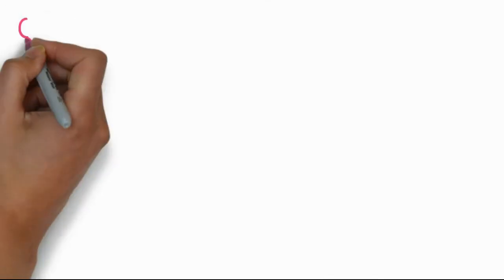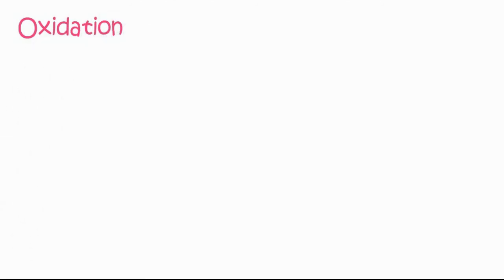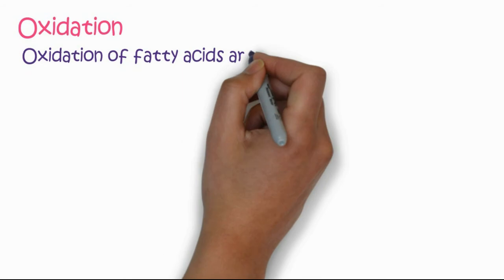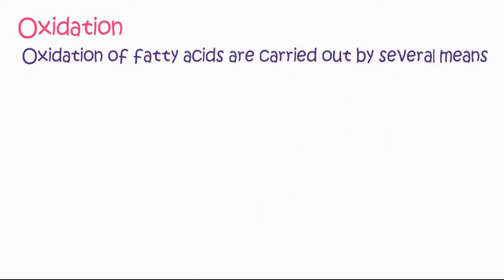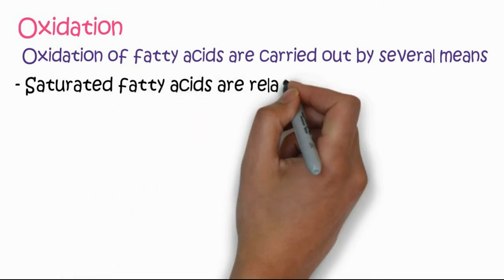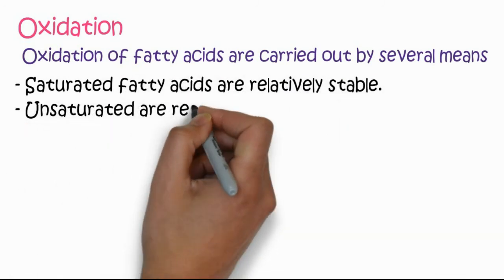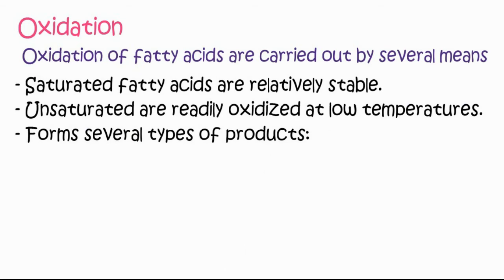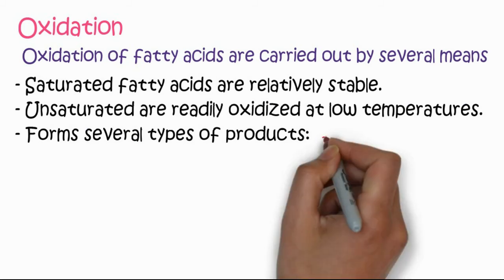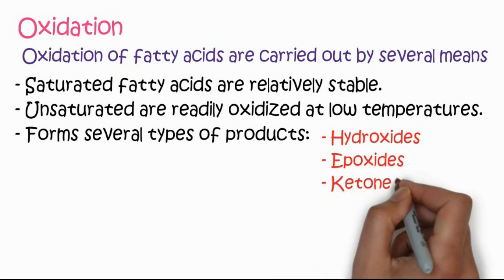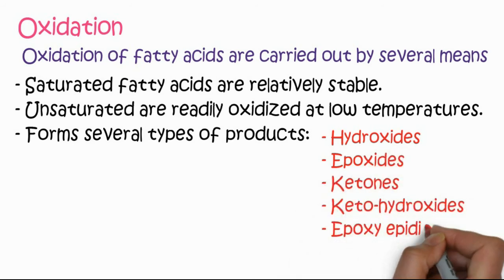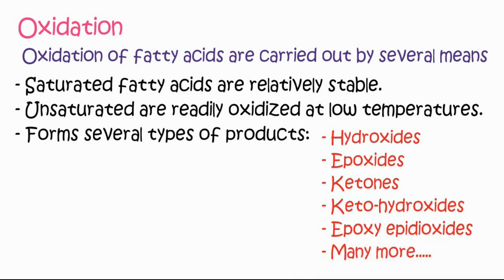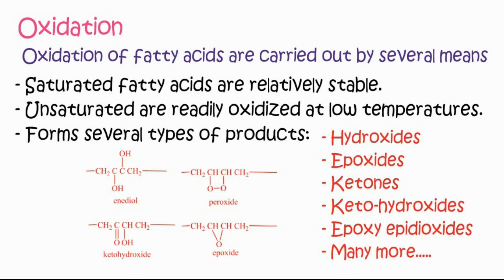Oxidation of fatty acids is carried out by several means. Saturated fatty acids are relatively stable compared to unsaturated fatty acids, which are readily oxidized at low temperature. Fatty acids form several types of products including hydroxides, epoxides, ketones, keto-hydroxides, and epoxy diols. You can see examples of diols, peroxides, hydroxides, and epoxides in this picture.